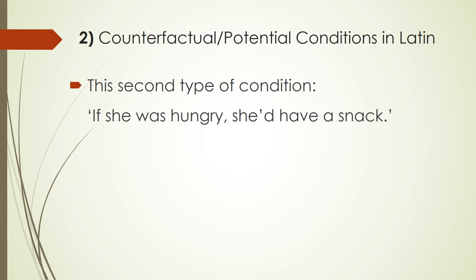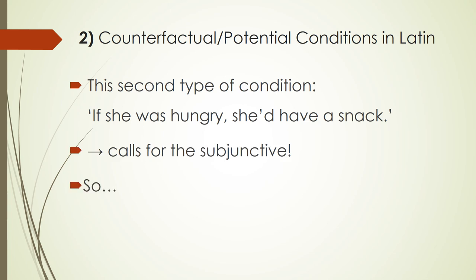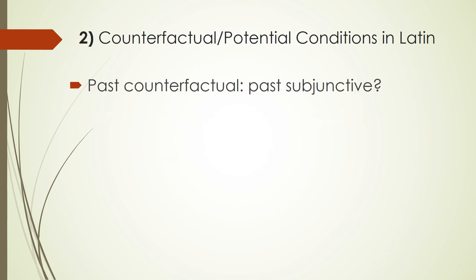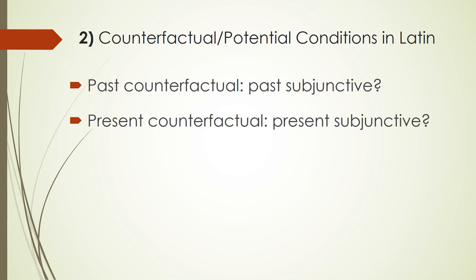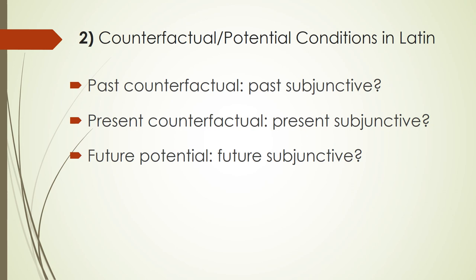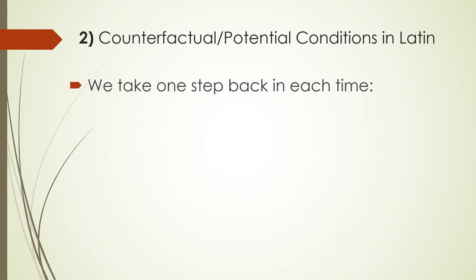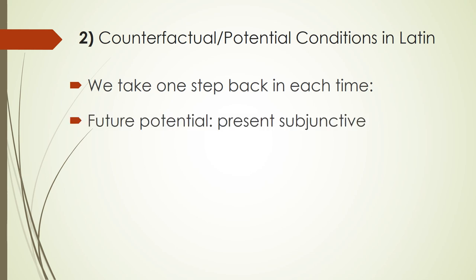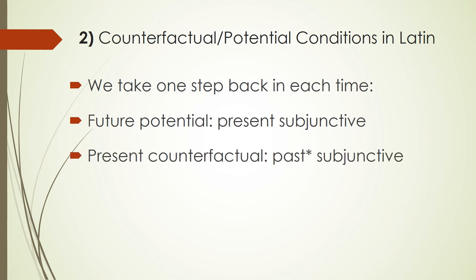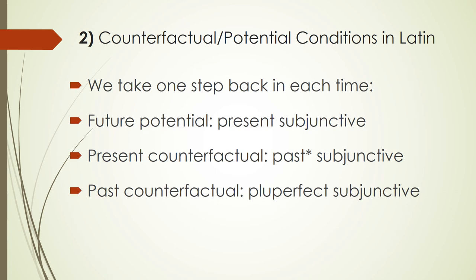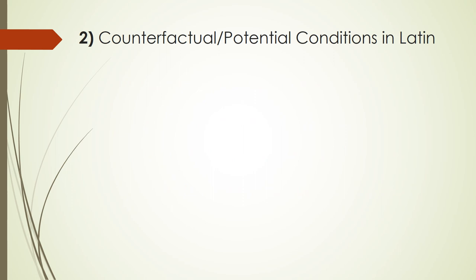For this second type of condition, Latin uses the subjunctive. In general conditions we had indicatives; now for counterfactuals we might expect past, present, and future subjunctives — but there is no future subjunctive in Latin. So Latin takes a step back at each time level: for the future potential, it uses the present subjunctive; for the present counterfactual, the imperfect subjunctive; and for the past counterfactual, the pluperfect subjunctive.